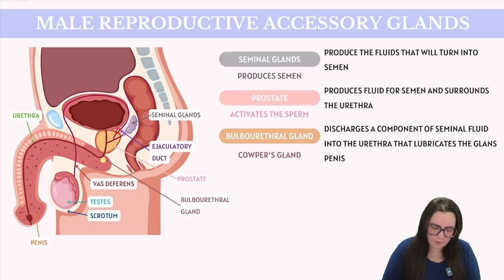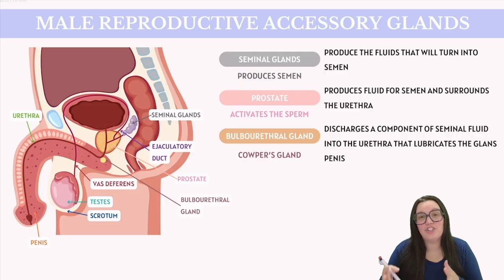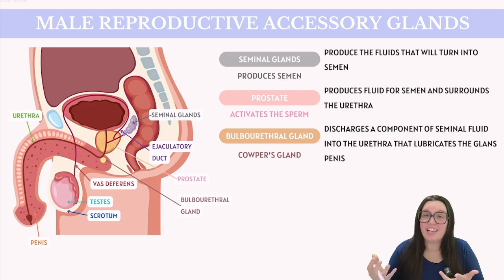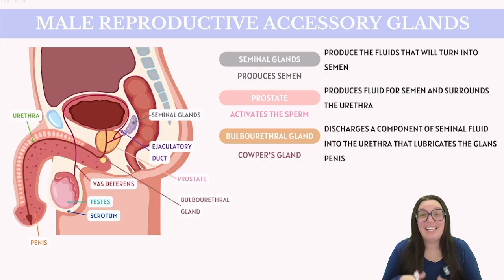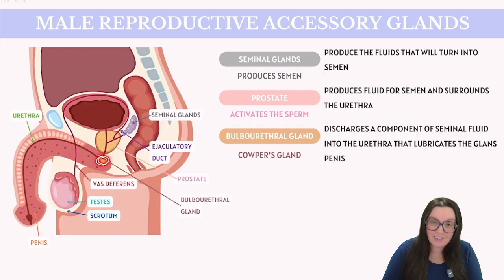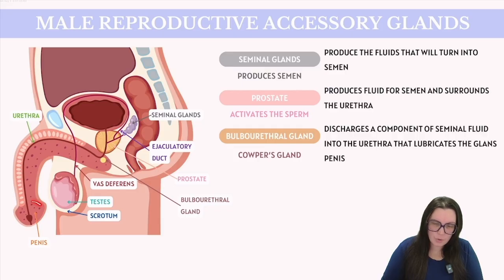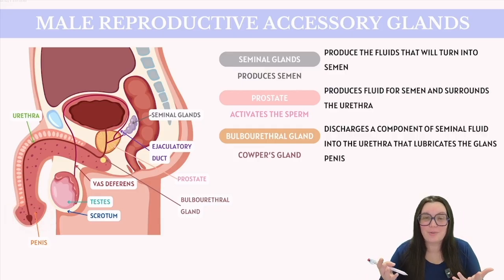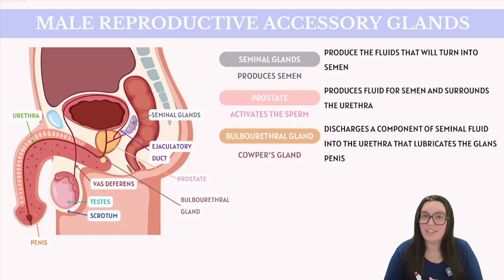Next, we have the prostate gland, which is positioned around the urethra near the bladder. The prostate's function is to contract during ejaculation, pushing its secretions into the urethra to mix with the ejaculate. These secretions help activate the sperm to increase fertility. Lastly, the bulbourethral glands are located near the prostate. These glands produce mucus that lubricates the glans penis — the tip of the penis — during sexual arousal, facilitating smoother penetration and enhancing sexual intercourse comfort.